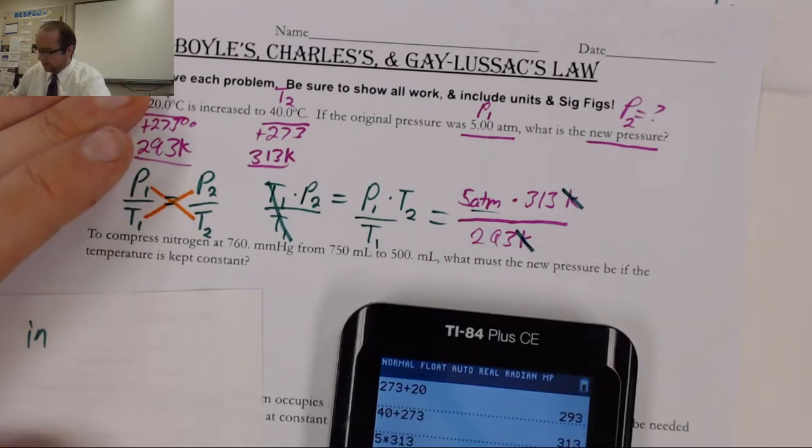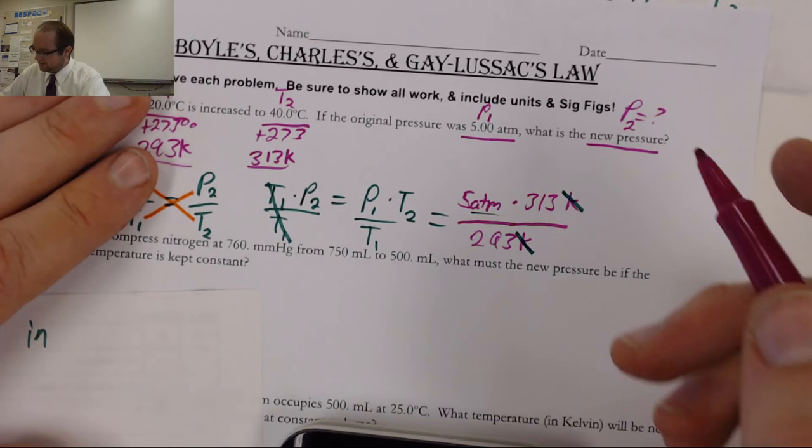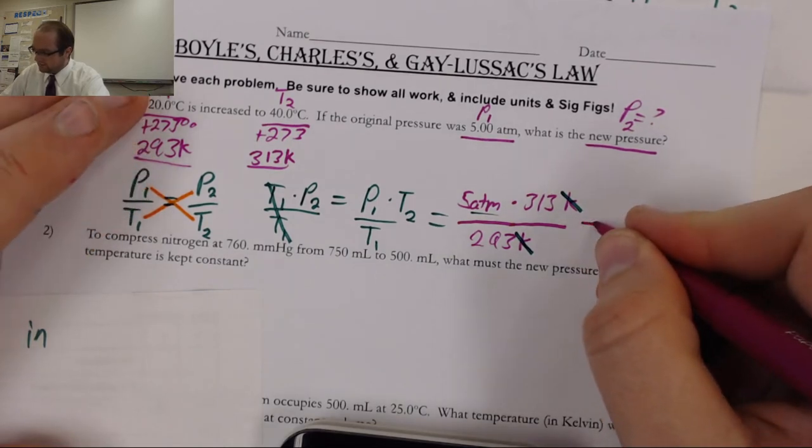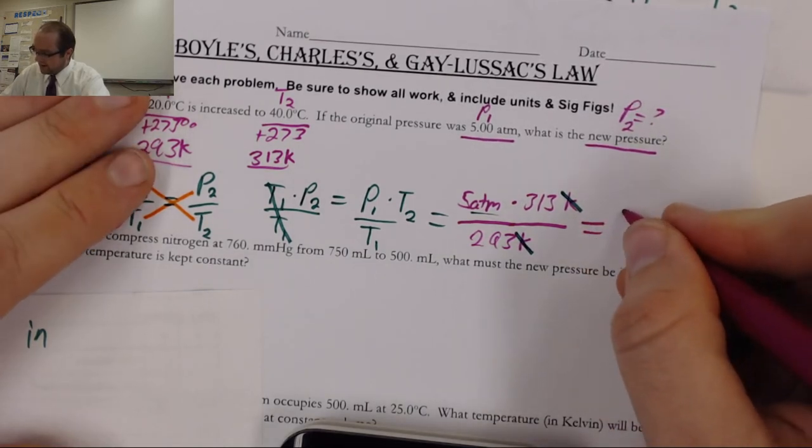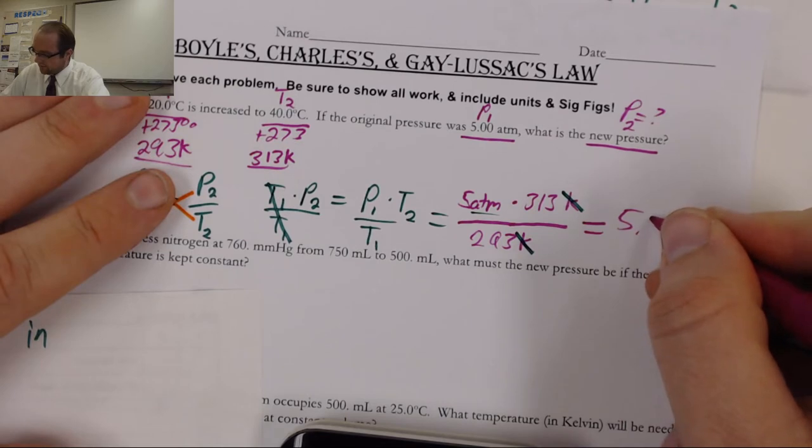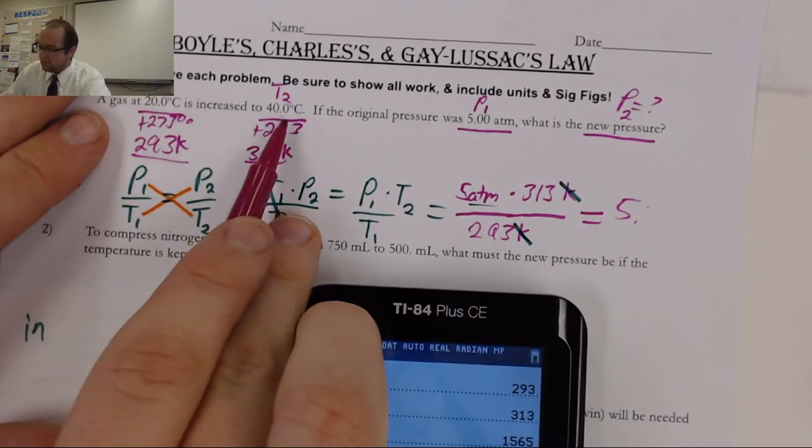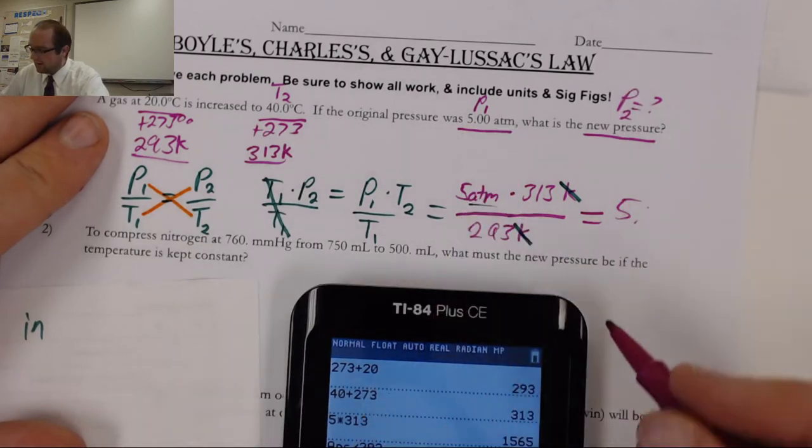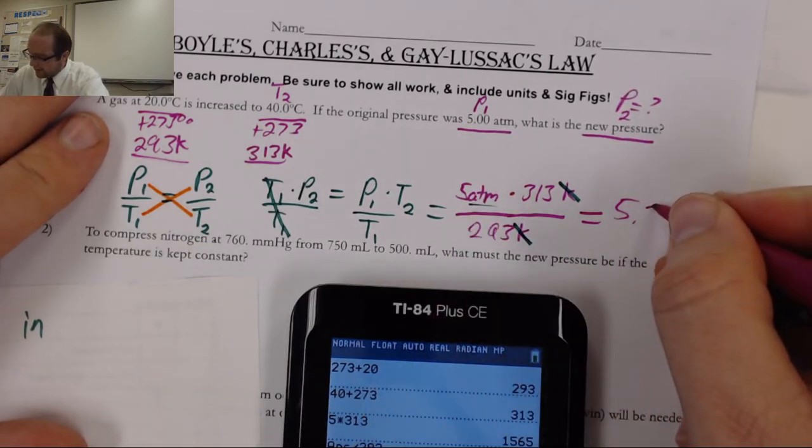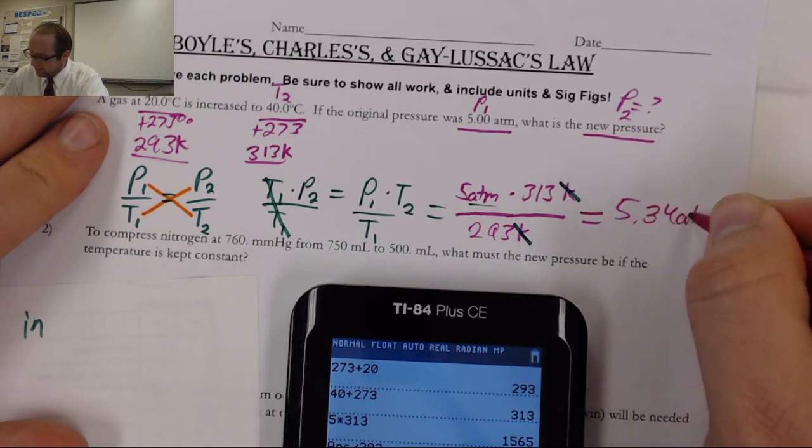Hit enter just to get my calculator and divide by 293. All right, so I get an answer of 5.341. We can check our sig figs. I have three sig figs, three sig figs, three sig figs. So, I'm going to round to 1, 2, 3, and keep it at 5.34 atm.